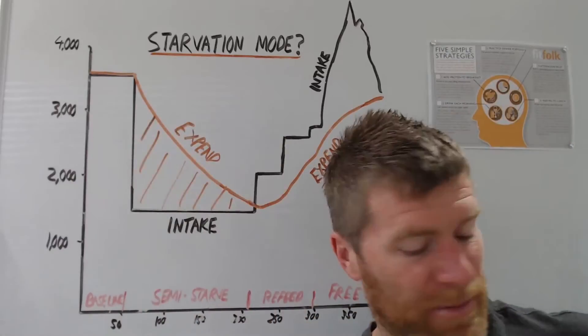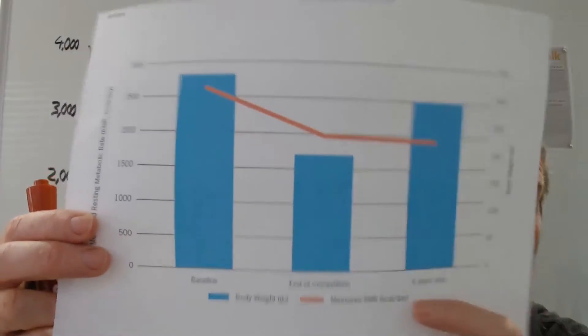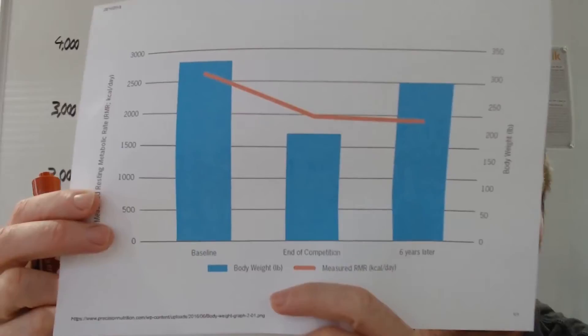Now, there is actually a counter argument to this. So quite a few years later, there was the biggest loser study, and this is very different people. These are really big people, 150 kilos.